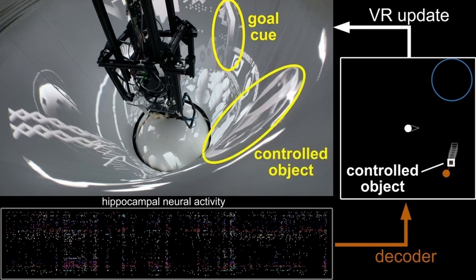In the JEDI task, the animal is always fixed at the center of the arena and needs to activate neural representations of remote locations to control where the object goes.